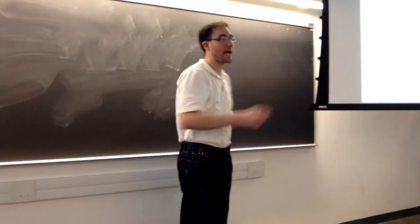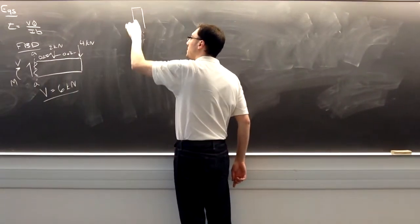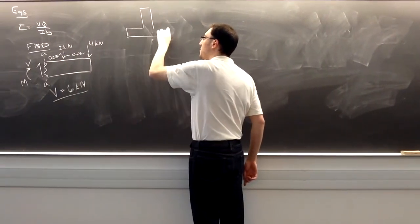For the whole cross section, we can find the value of I. It's a relatively simple cross section, but it is going to be made of two rectangles here.